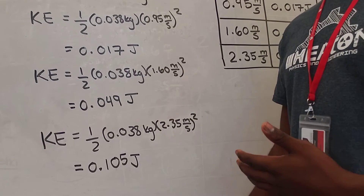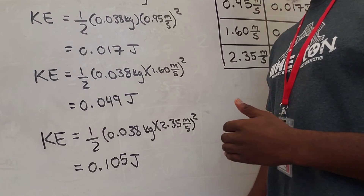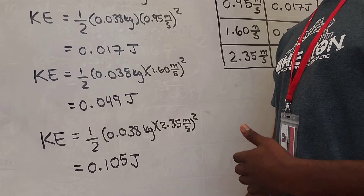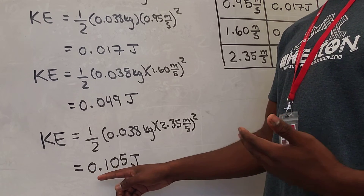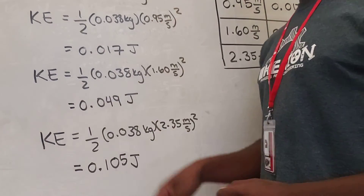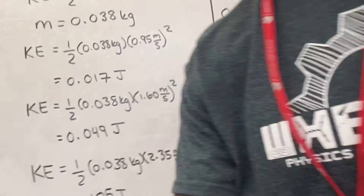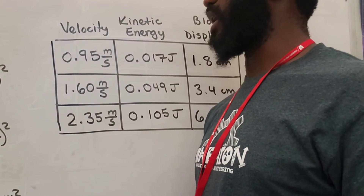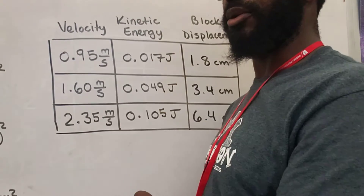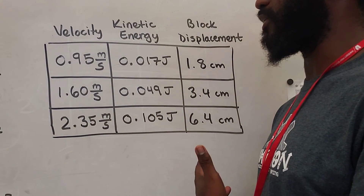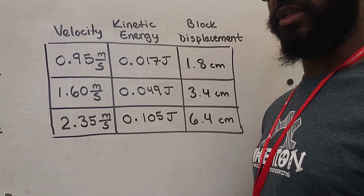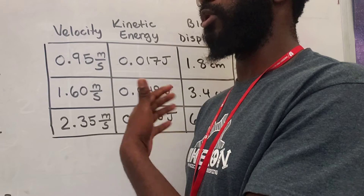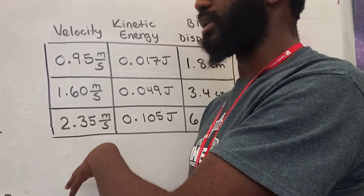Now we're going to measure the energy when our car rolls from a height of three books high. One-half the mass of the car times the velocity, which was 2.35 meters per second at three books high, gives us an energy of 0.105 joules. So now that we have all of our energies measured, let's go ahead and throw them in a table. The basic table you're going to need has just the velocity and the kinetic energy, but I also included the block displacement because I think that helps us see the effect of the energy even more.